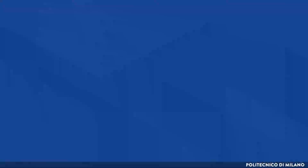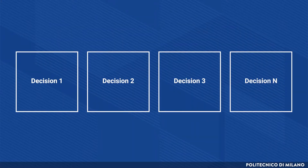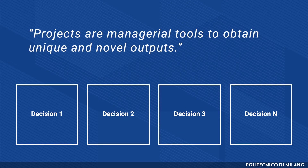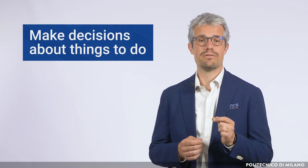At first, we can think of a project as an array of decisions to be made. This comes directly from the project definition. Projects are managerial tools to obtain unique and novel outputs. Being the output new, the sequence and the content of the activities to be performed will be new as well. Thus, a crucial step will be to make decisions about things to do.